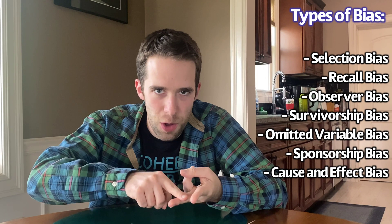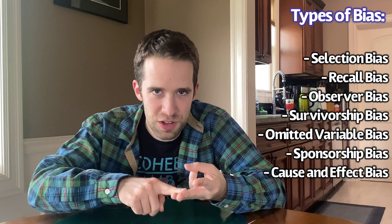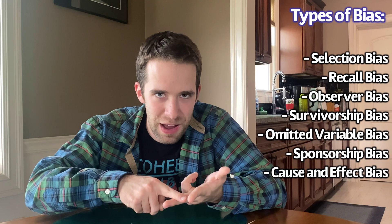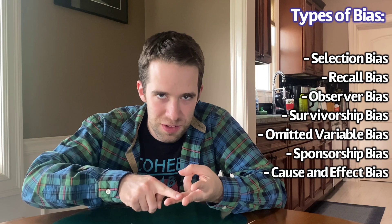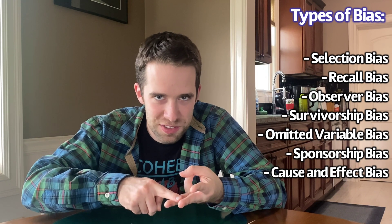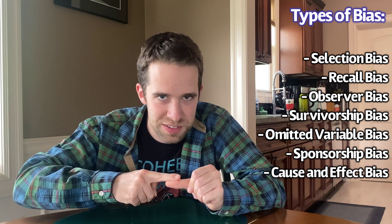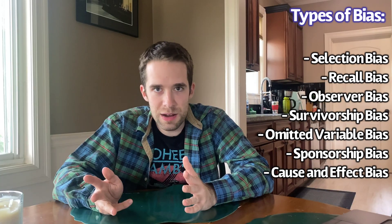There are seven different types of bias that we're going to discuss here: selection bias, recall bias, observer bias, survivorship bias, omitted variable bias, sponsorship bias, and cause and effect bias.